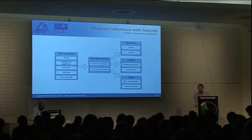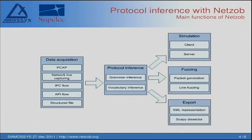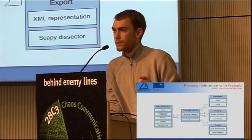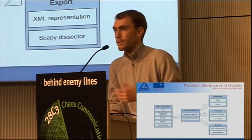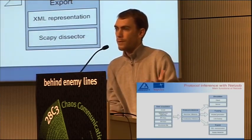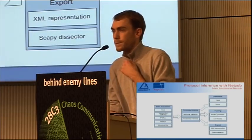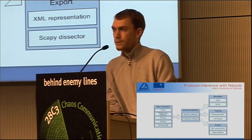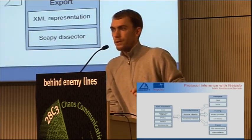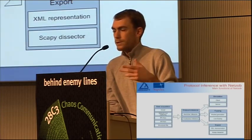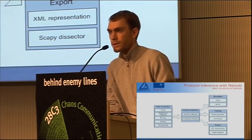This is a big picture of NetZub — it has five parts. The first part is data acquisition: there are captors and sensors to retrieve data from network or API calls. The next part is based on grammar and vocabulary inference. As output, you have the simulation module — you can generate traffic, both client and server. You also have the fuzzing part, where you use the simulation part to do variations on data. And you can export the inferred protocol to the dissector of Wireshark or Scapy, for example.